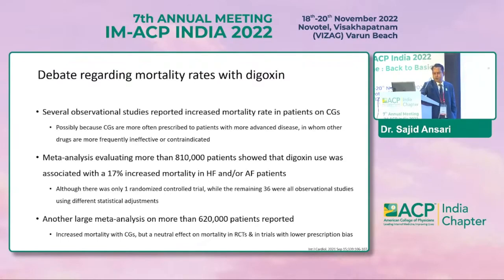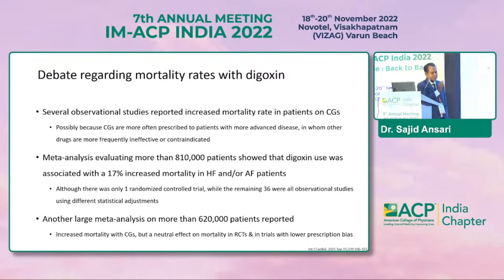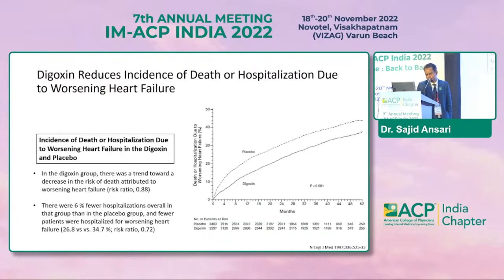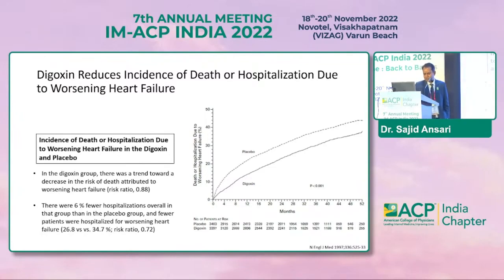The debate regarding digoxin and mortality — does it truly increase mortality? Not at all. Various meta-analyses used digoxin in two subsets: patients with poor LV function in sinus rhythm, and atrial fibrillation patients. When digoxin was used in atrial fibrillation patients to control heart rate, there was no worsening of mortality compared to the placebo group. Digoxin reduces the incidence of death or hospitalization due to worsening heart failure. Comparing the digoxin arm versus placebo arm, the p-value was significant at less than 0.001, confirming that recurrent hospitalization reduction was noted with digoxin compared to placebo.